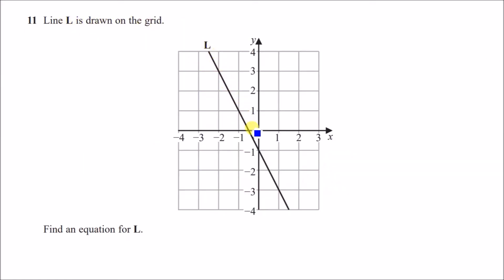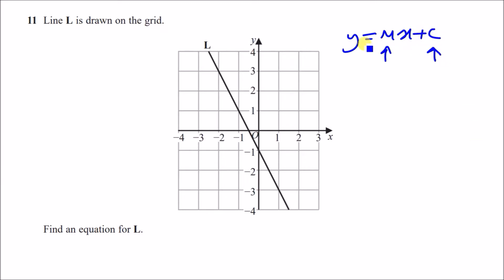Line L is drawn on the grid, and we need to find its equation. Every time you have a straight line equation, always think y = mx + c, where m is the gradient and c is the y-intercept. Looking at the graph, since c is the y-intercept, we can see the line intercepts the y-axis at −1, so c = −1.